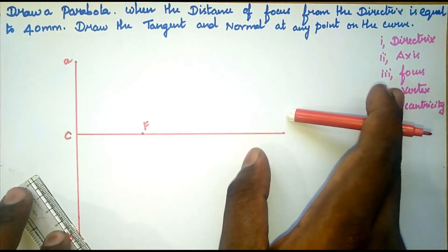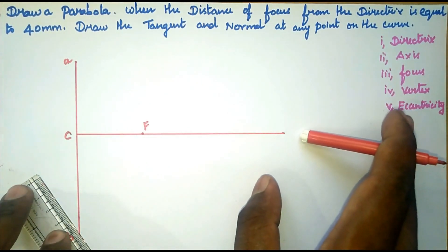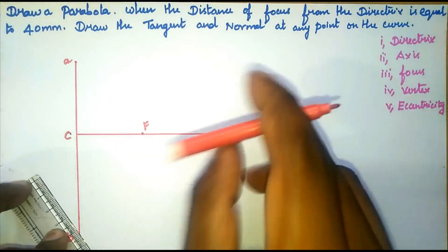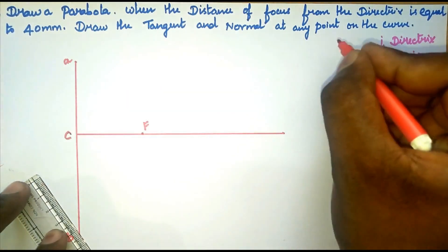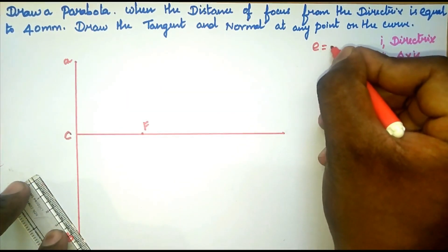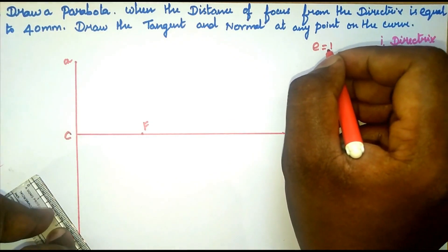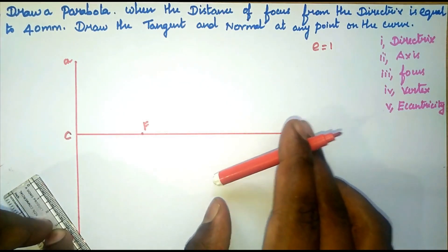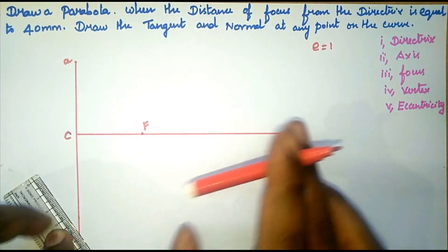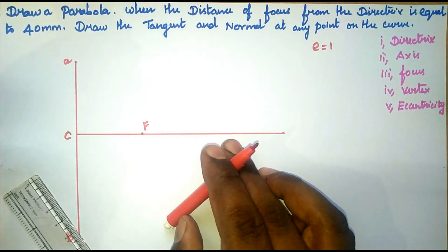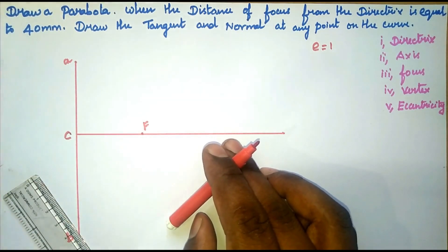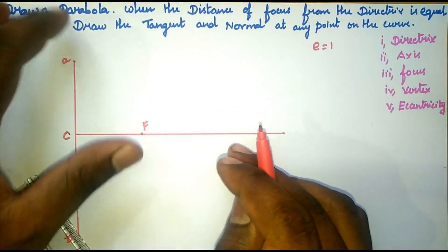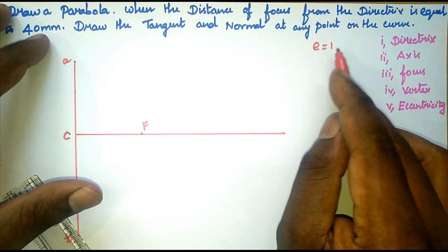Next, the terms vertex and eccentricity. In order to find the vertex, we need to know the eccentricity value. The eccentricity value for a parabola is equal to 1. If the eccentricity value is less than 1, it is an ellipse. If the eccentricity value is greater than 1, that is a hyperbola. With the help of eccentricity, we differentiate between parabola, hyperbola, and ellipse.